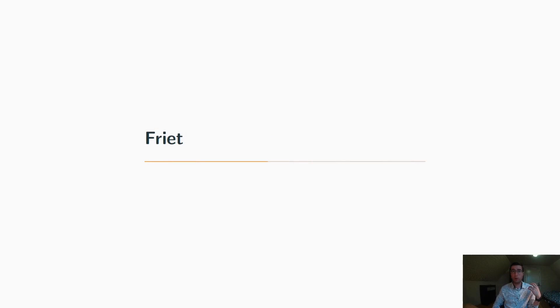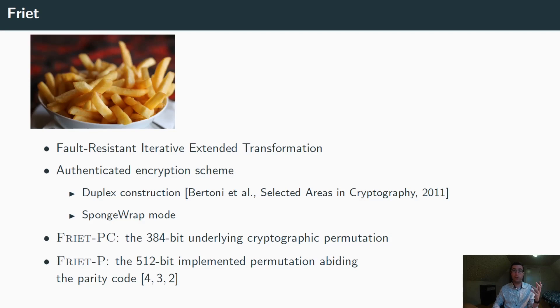In the first part of the presentation, we talked about how to design a code-abiding permutation. We will now give a concrete example for that with FRIT. So what is FRIT? FRIT is actually the Dutch word for French fries. Some other people think it also stands for fault-resistant, iterative, extended transformation, but personally, I like the first explanation much better.